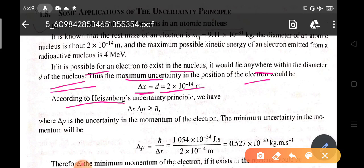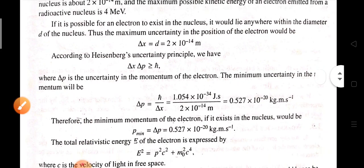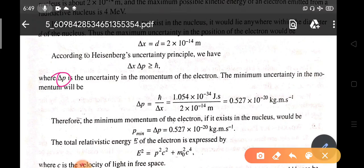According to Heisenberg's uncertainty principle, Δx · Δp ≥ ℏ, where Δp is the uncertainty in the momentum of the electron. The minimum uncertainty in momentum is Δp = ℏ/Δx, which gives us 0.527 × 10⁻²⁰ kg·m·s⁻¹. This is the minimum momentum p_min.